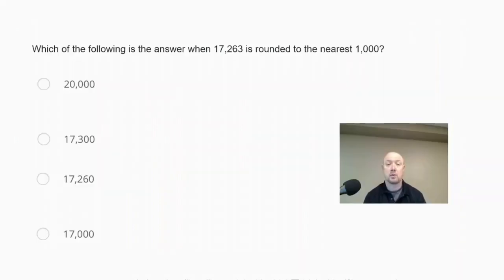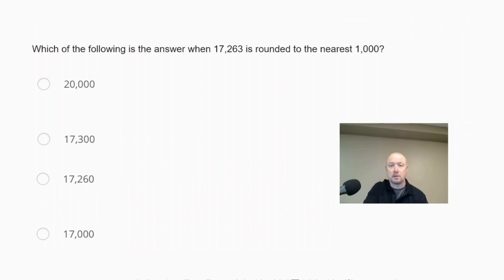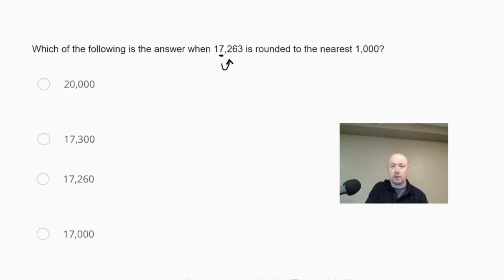Which of the following is the answer when 17,263 is rounded to the nearest thousand? The choices are 20,000; 17,300; 17,260; or 17,000. The digit 7 is in the thousands place. We look at the digit to the right of 7, which is 2. Since 2 is less than 5, we round down — so instead of rounding up to 18,000, we round down to 17,000.